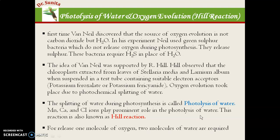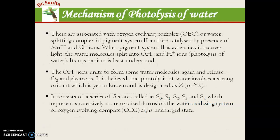For one oxygen molecule to be released, two water molecules are required. This process is carried out by the oxygen-evolving complex (OEC). Photosystem 2 is active in this process — it receives light, and this activates the photolysis of water, helping produce hydroxyl ions and hydrogen ions. The hydroxyl ions unite to form water molecules again and release oxygen and electrons. It is believed that photolysis of water involves a strong oxidant, denoted as Z.